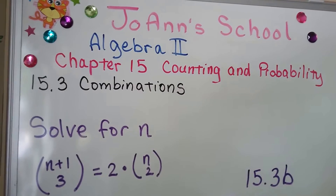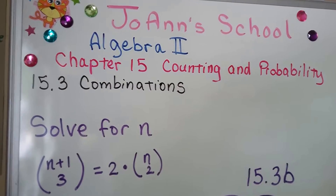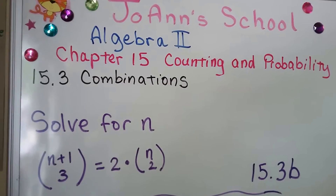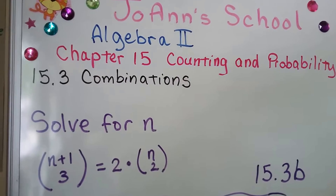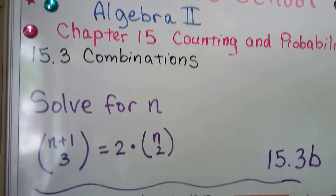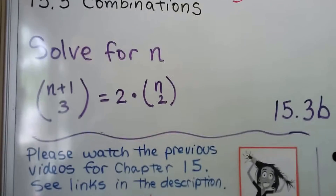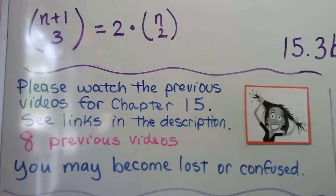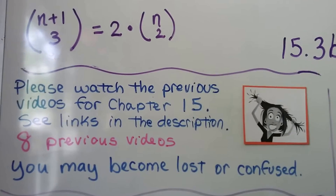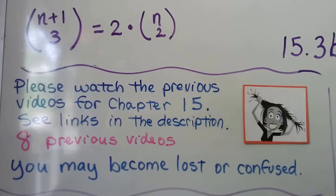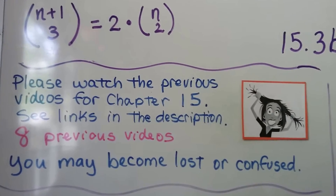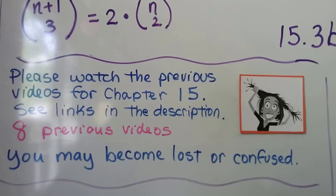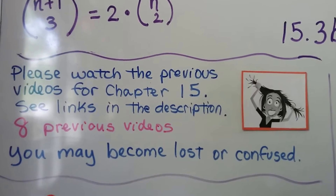This is a continuation of the previous video. We're going to do combinations and solve for N. This is 15.3b. We have eight previous videos for this chapter. If you haven't seen them and you become lost or confused, just click the description and watch them. It's very important you saw the video before this one, which is also linked in there.